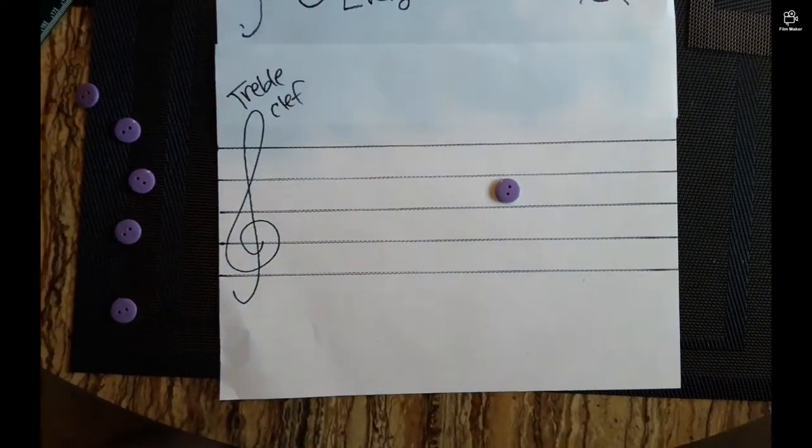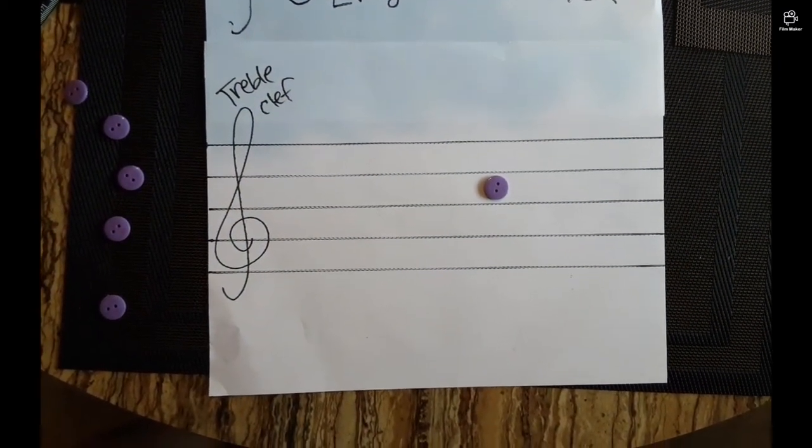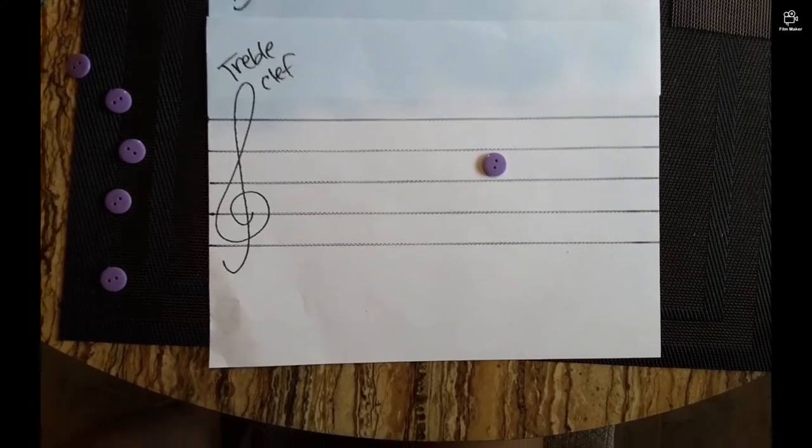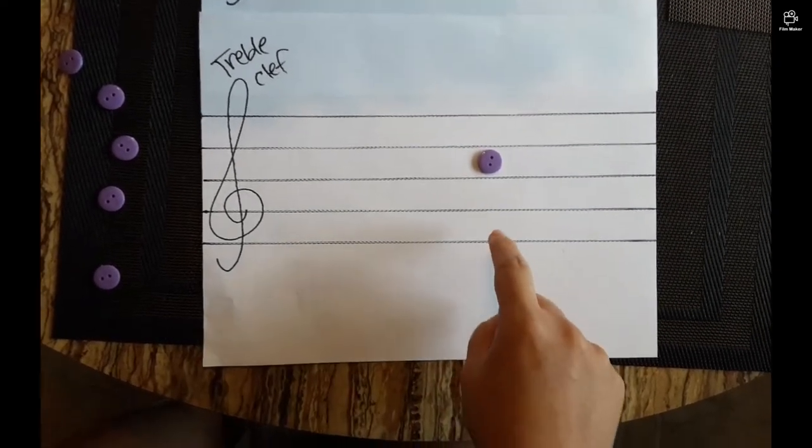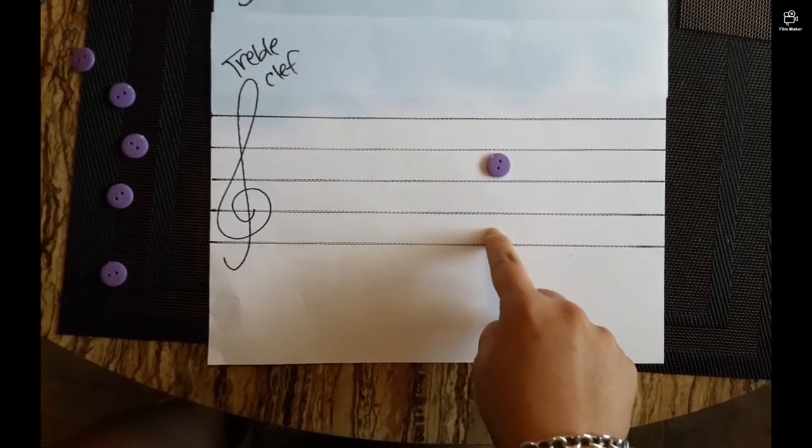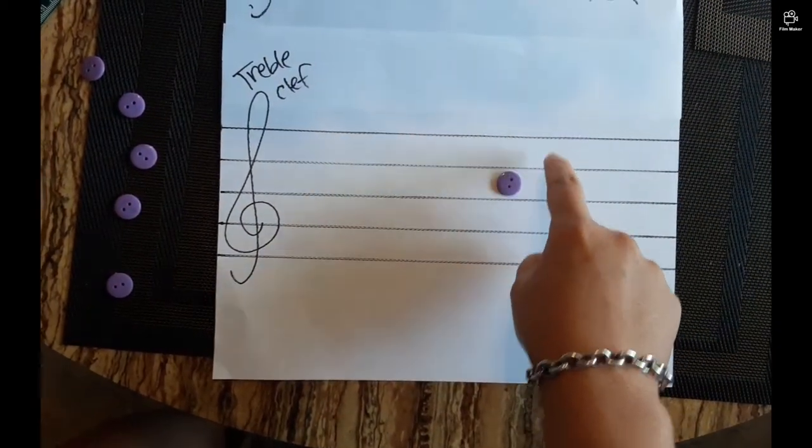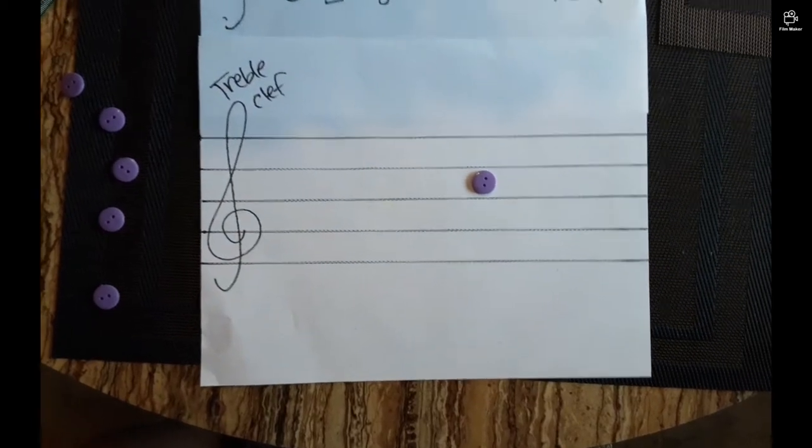Is that a line note or space note? That's a space note. So what does space rhyme with? Face. How do we spell face? F down here. A, C, E. So that's a C. Okay.